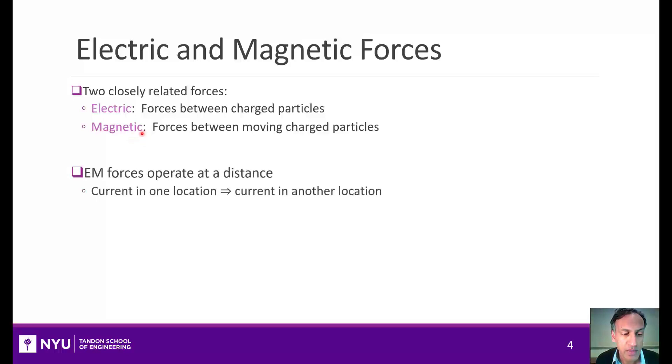What's important for electromagnetic radiation for wireless communications is that these forces operate at a distance, meaning that if you have a current which is the motion of charged particles in one location they will induce motion or current of charged particles in another location. And that very clearly gives a way to communicate information.